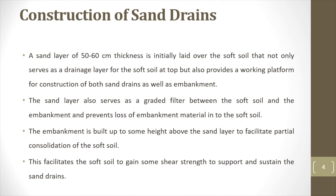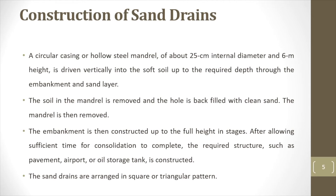The full height of the embankment is not constructed in a single stage because the soft soil will not have sufficient strength to support all the embankment load. After the embankment is constructed to some height, the sand drains are installed. A circular casing or hollow steel mandrel of about 25 cm internal diameter and 6 m height is driven into the soft soil to the required depth. The soil in the mandrel is removed and the hole is backfilled with clean sand. The mandrel is then removed.